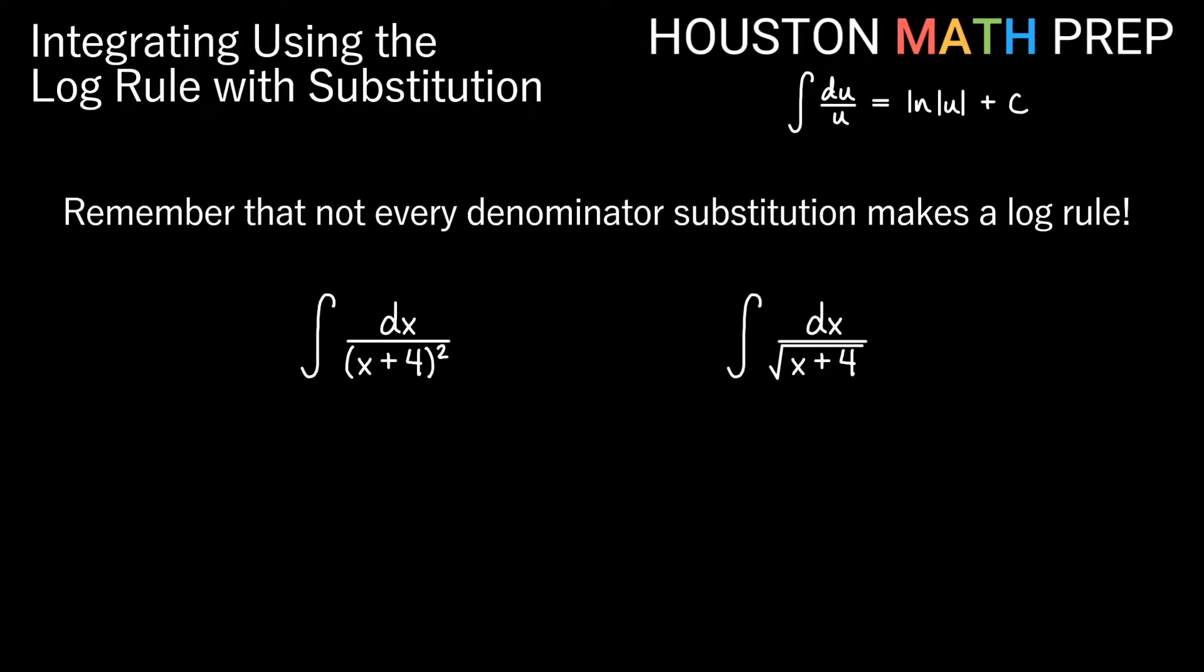Remember that not every time you substitute something in the denominator as u, you're going to get a log rule. Right here we have the integral of dx over x plus 4 squared. We would make a substitution u equals x plus 4 here, but then the bottom is u squared. And so you'd get some sort of a du over u squared, and that would be a power rule, not a log rule.